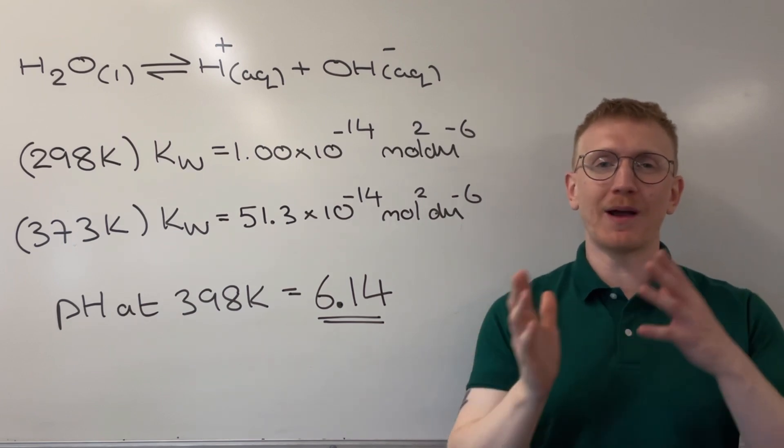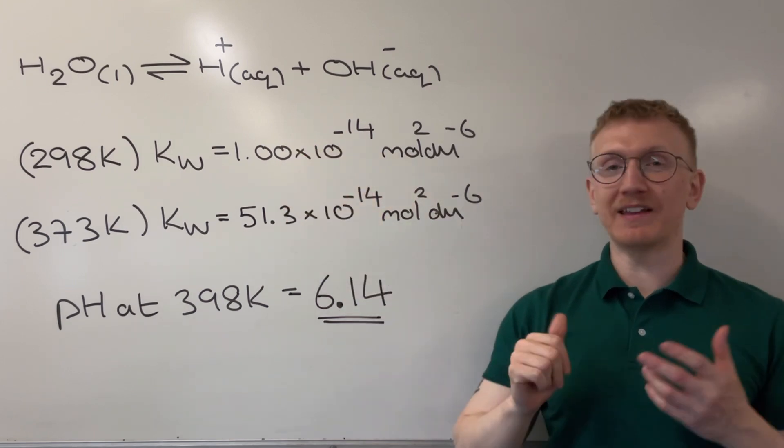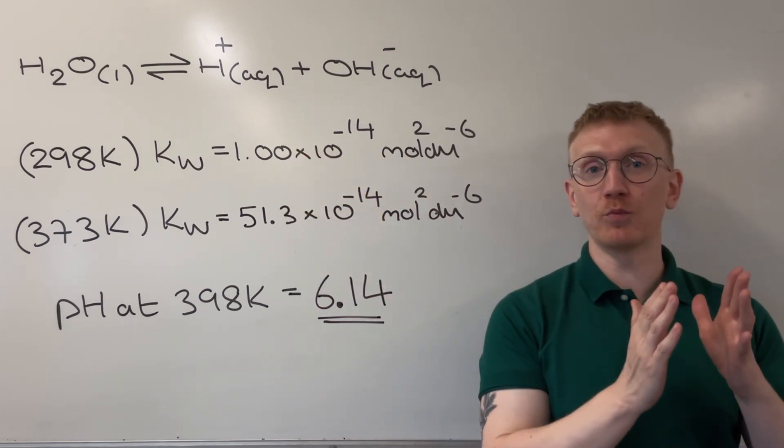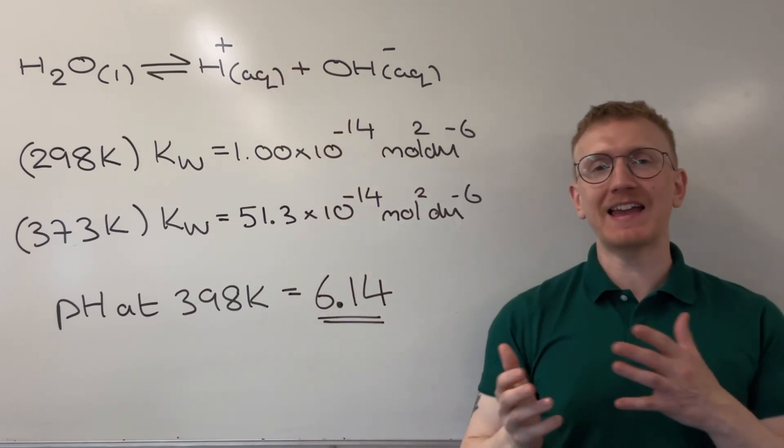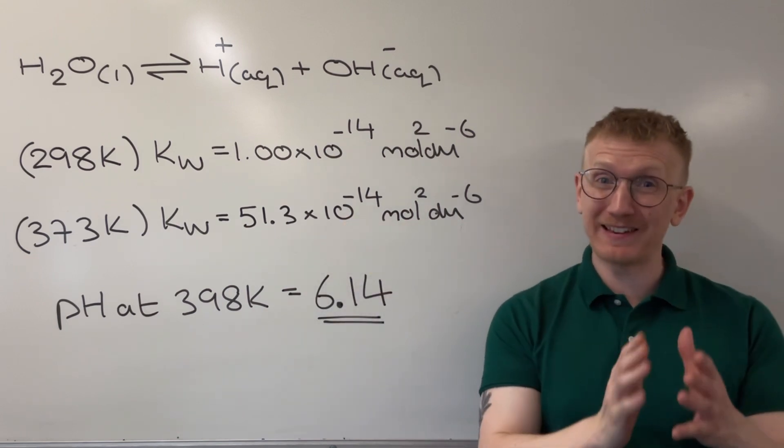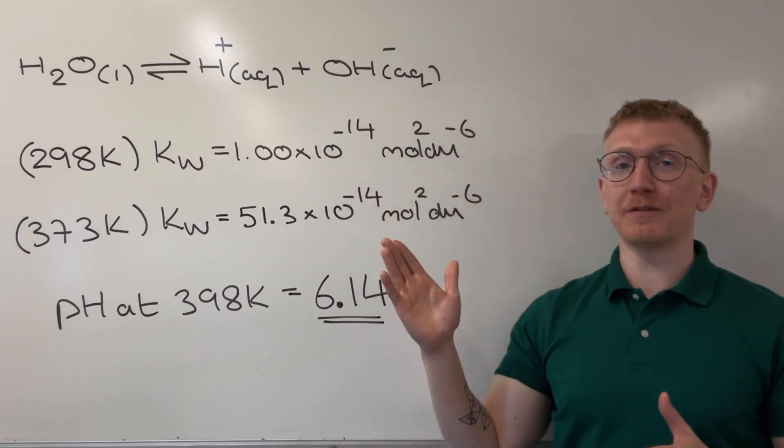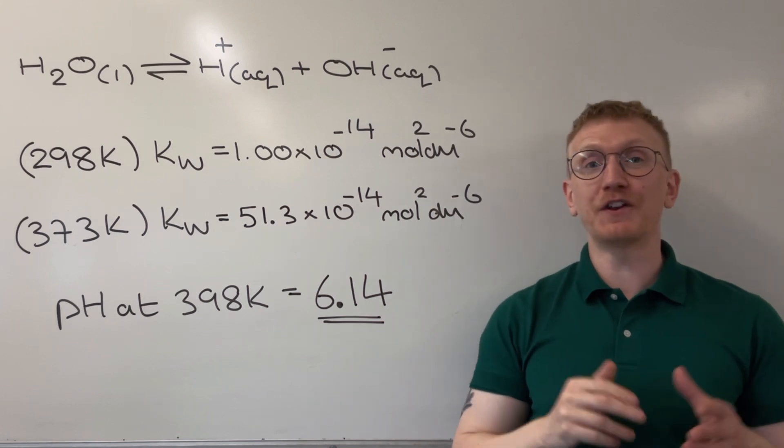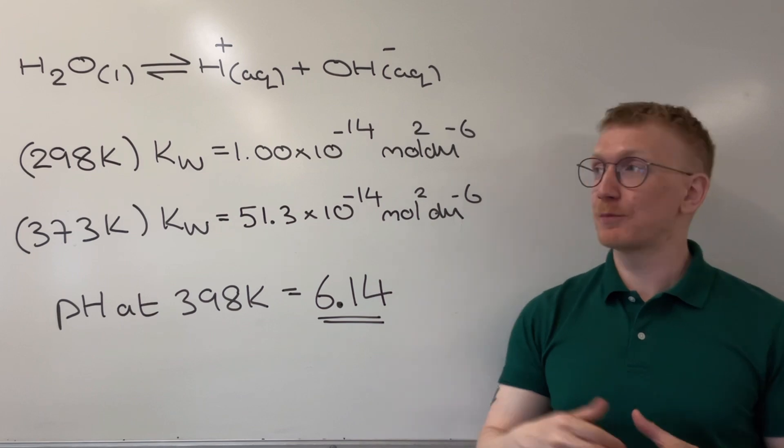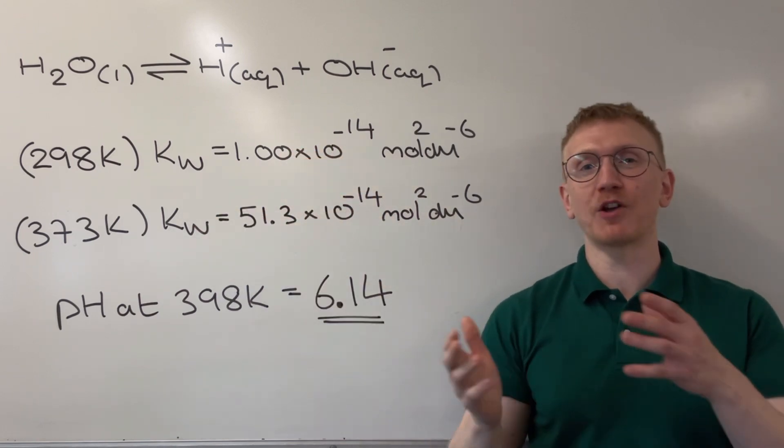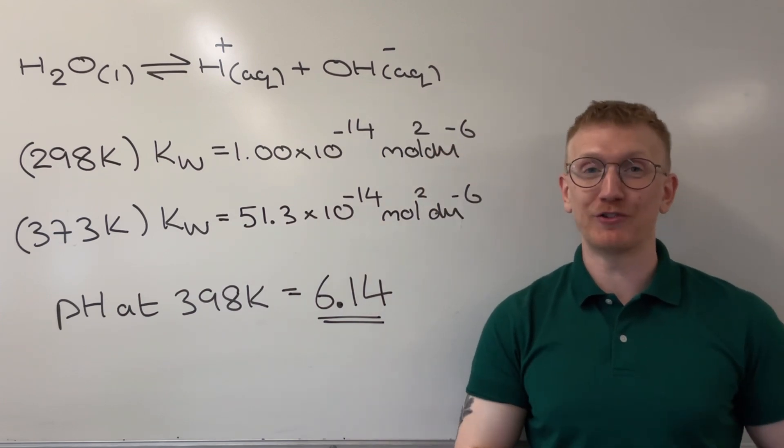When we think back to our theory about other equilibrium constants, if the KW value has increased, that means the position of equilibrium has moved towards the right. It's still very much on the left-hand side because we can see the KW value, even at 100 degrees C, is still significantly less than 1. But it does mean it is shifting a little bit towards the right. What that also tells me is that the sign for the enthalpy change for the dissociation of water in the forwards direction must be endothermic, because we've proven it's shifting to the right as the temperature is going up, and we know that equilibrium will always shift in the endothermic direction when the temperature rises.